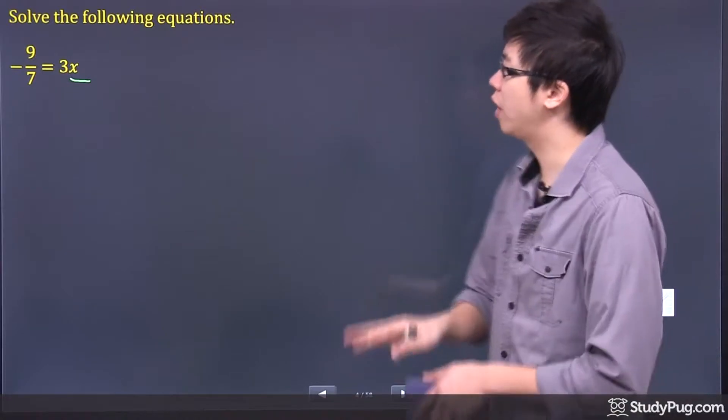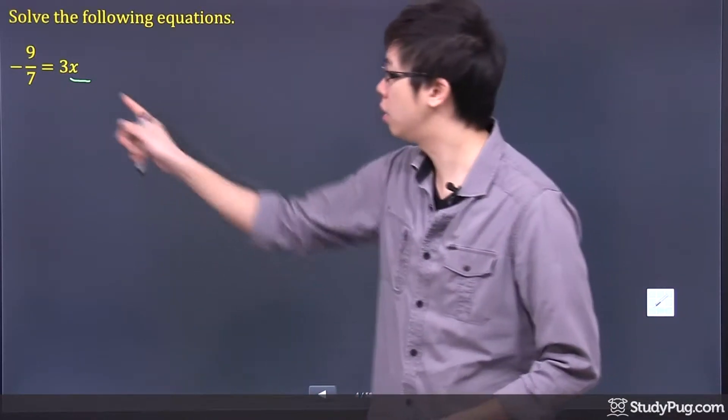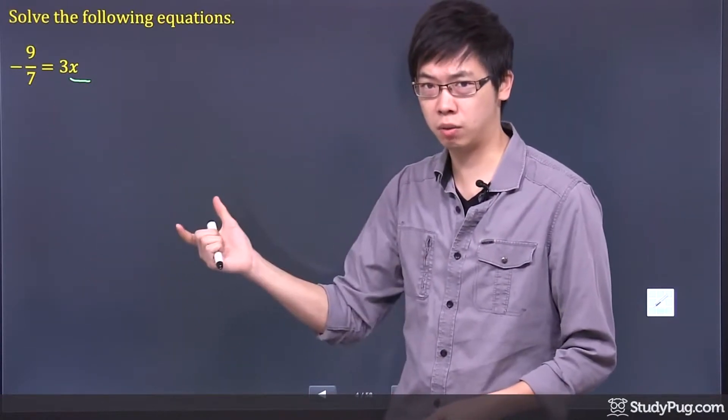So basically, you have to remove anything that's around the x. So far, I see there's a 3 beside it. Now, as you can see, the 3 is multiplied to the x, right?